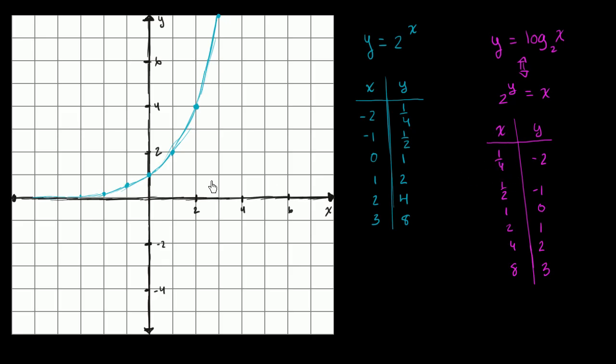And so let's graph this. When x is equal to 1 fourth, y is equal to negative 2. When x is 1 half, y is equal to negative 1. When x is 1, y is 0. When x is 2, y is 1. When x is 4, y is 2. When x is 8, y is 3.